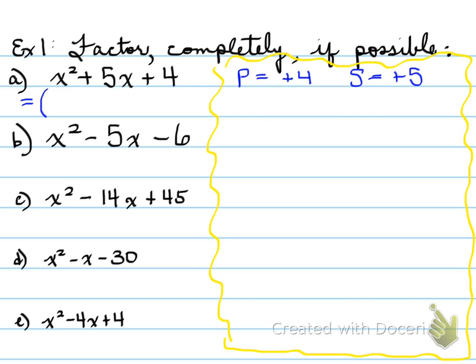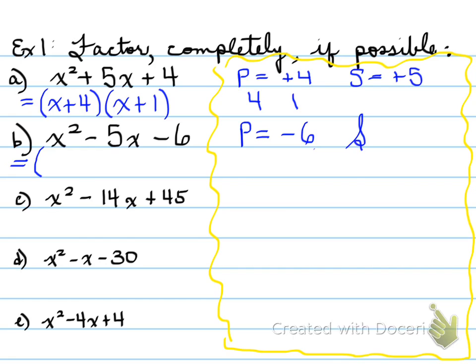What two numbers multiply to give you 4 and add to give you 5? Those would be 4 and 1, because 4 times 1 gives you 4, and 4 plus 1 gives you 5. So x plus 4 and x plus 1 are the factors for this question.